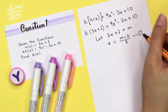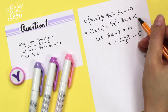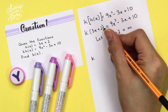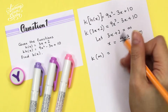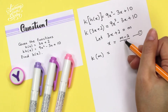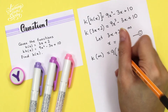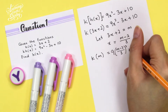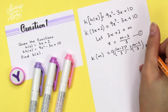The next step is to substitute x = (m - 2) / 3 into this function. So we change 3x + 2 to m, giving us k(m). We replace all the x's with (m - 2) / 3, substituting into each term. So it becomes: 9 · ((m - 2) / 3)² - 3 · ((m - 2) / 3) + 10.